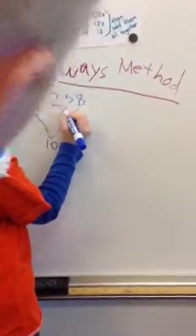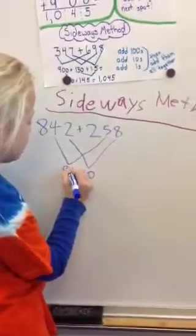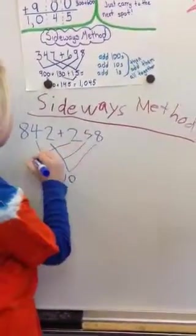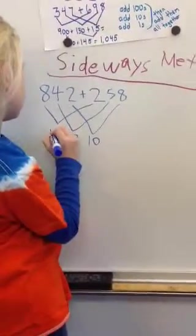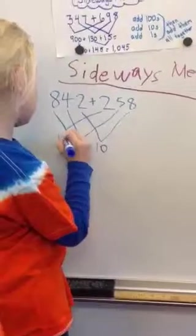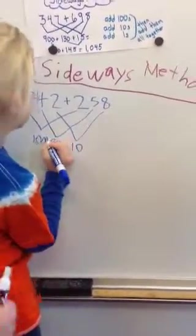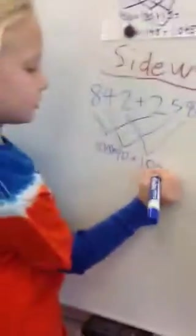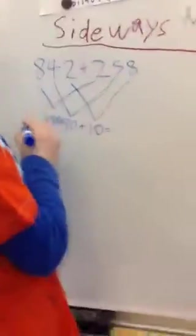You would add 50 plus 40, and that's 90. And 200 plus 800 equals 1,000. And add them all up, and that is 10 plus 90 plus 200 plus 1,000.